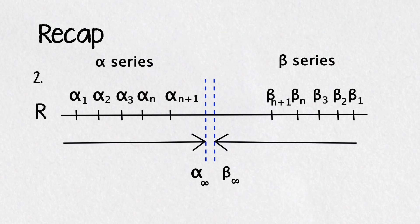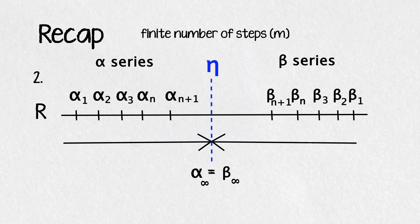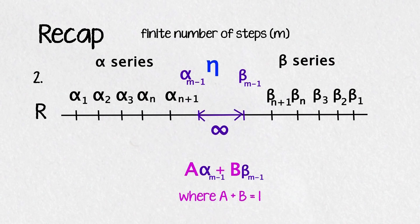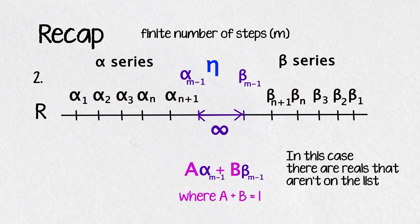Case 2, the series converged to the same limit eta in a finite number of steps m, but this means that the alpha and beta before eta, alpha m-1 and beta m-1 which must be distinct, have an infinite number of reals in between them which can't be on the list otherwise the process wouldn't have converged to the limit eta yet, so in this case there are also reals that aren't on the list.